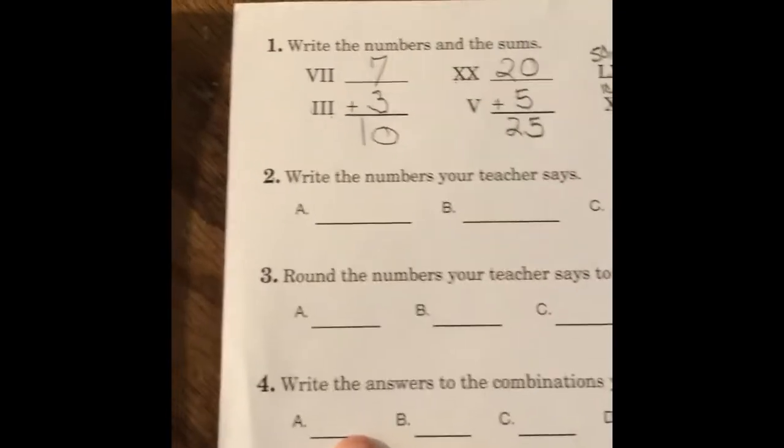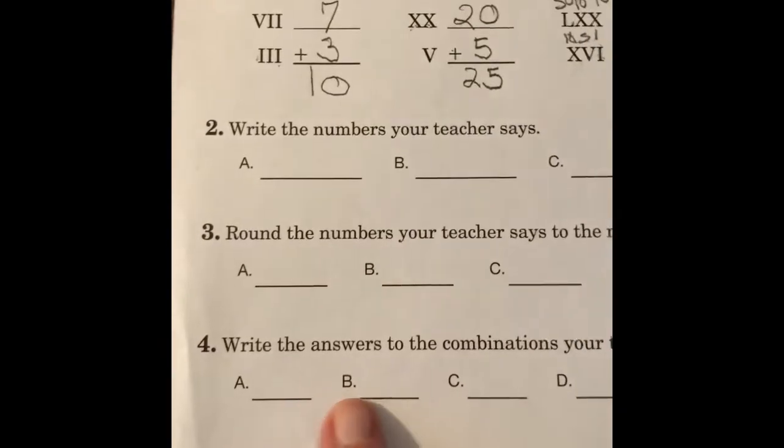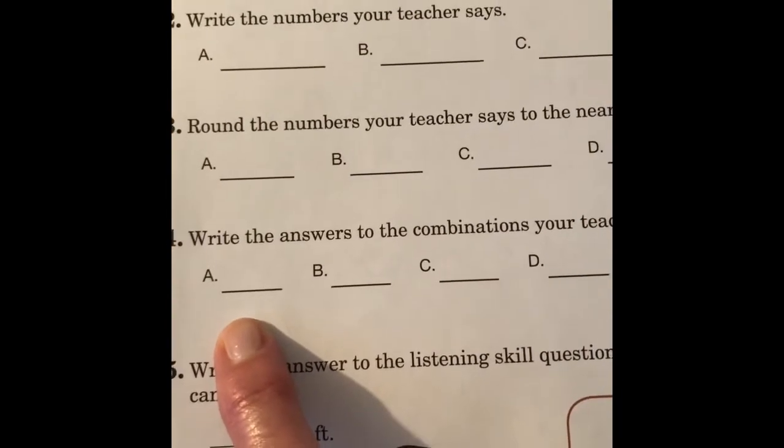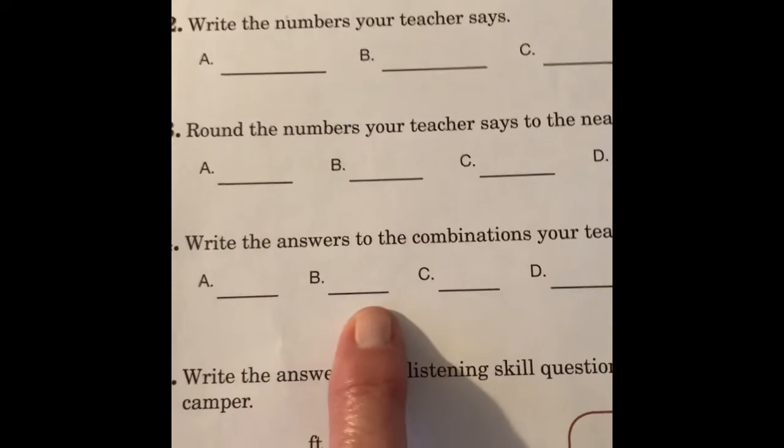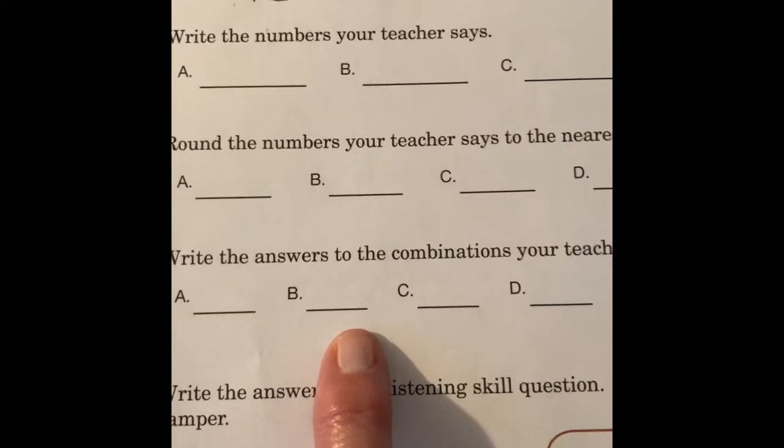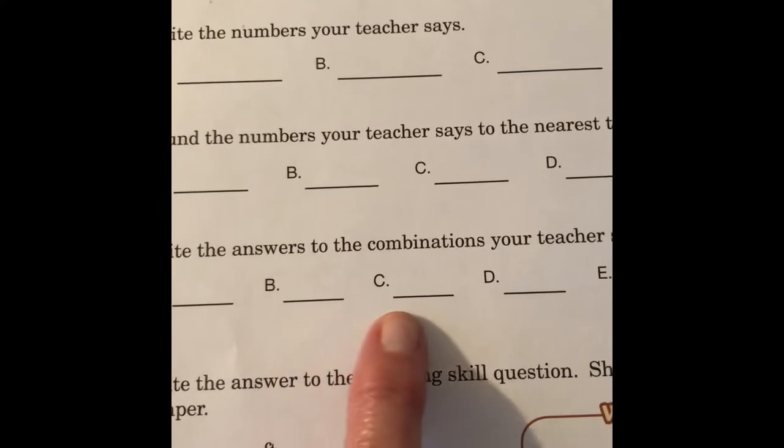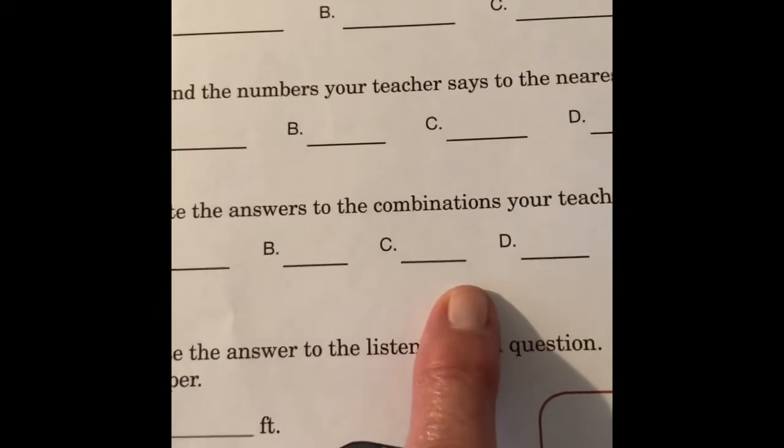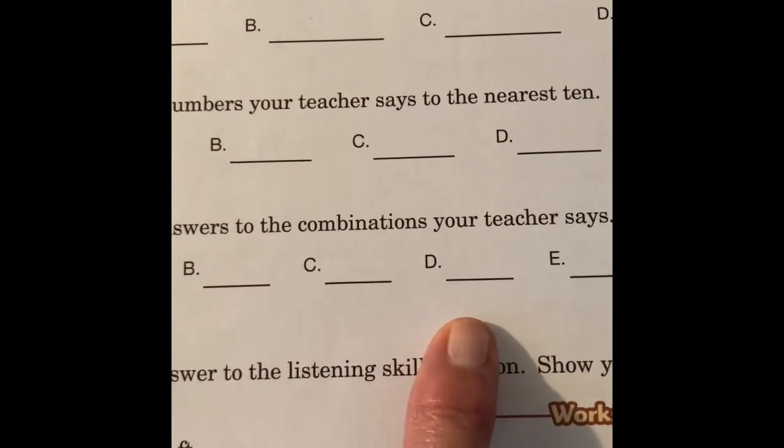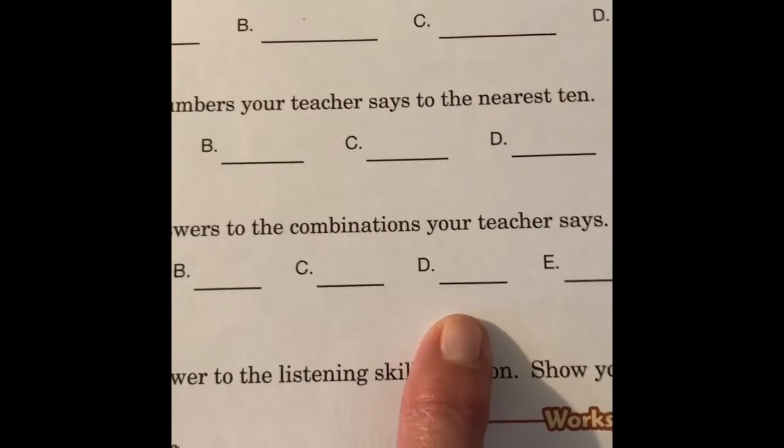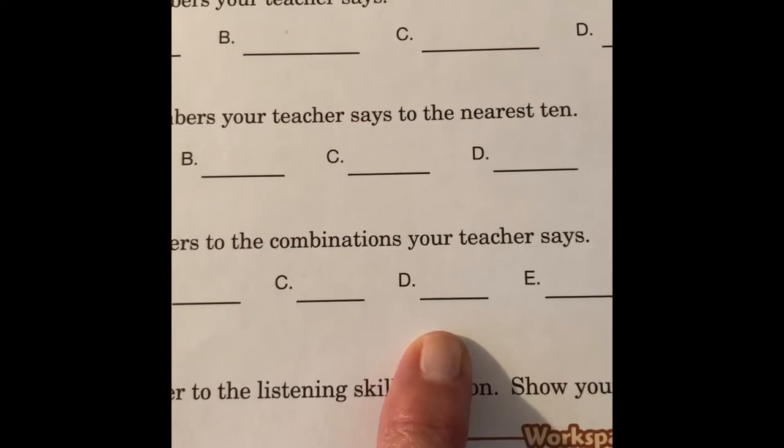Let's go to number 4. Write the answers to the combination your teacher says. We do this a lot. A, 4 times 5, 4 times 5. B, 10 plus 2, 10 plus 2. C, 30 divided by 5, 30 divided by 5. D, is 6 plus 8. 6 plus 8.